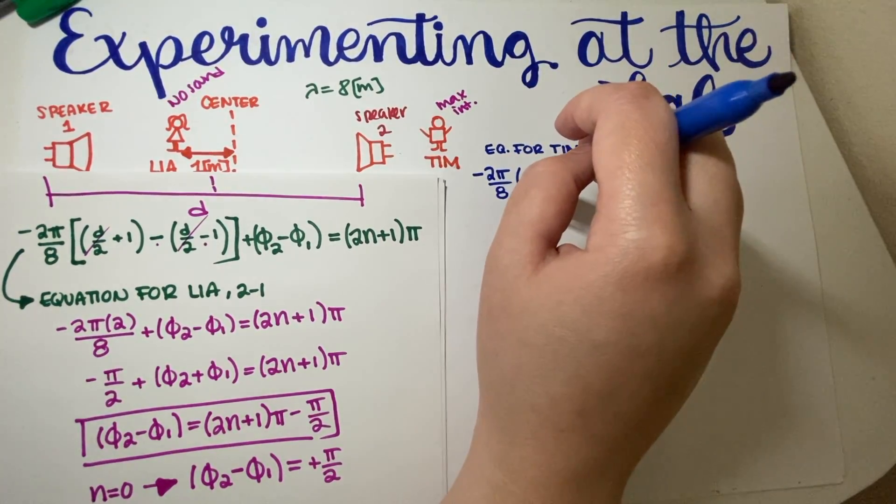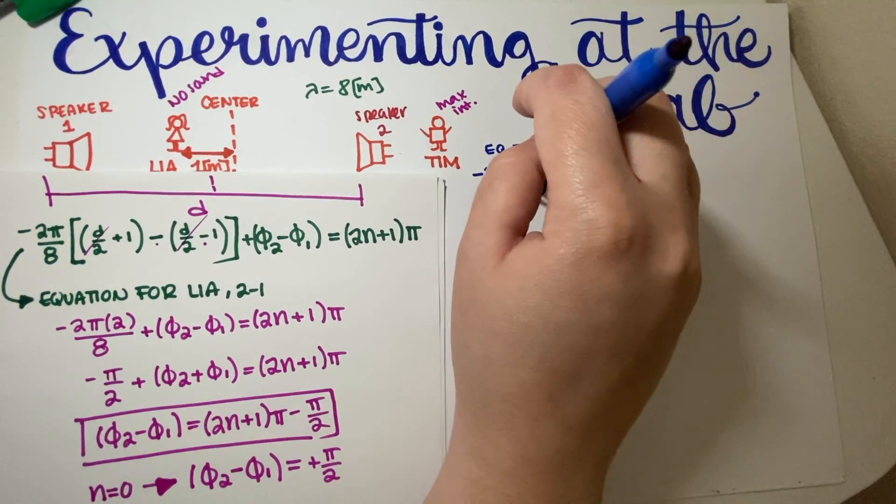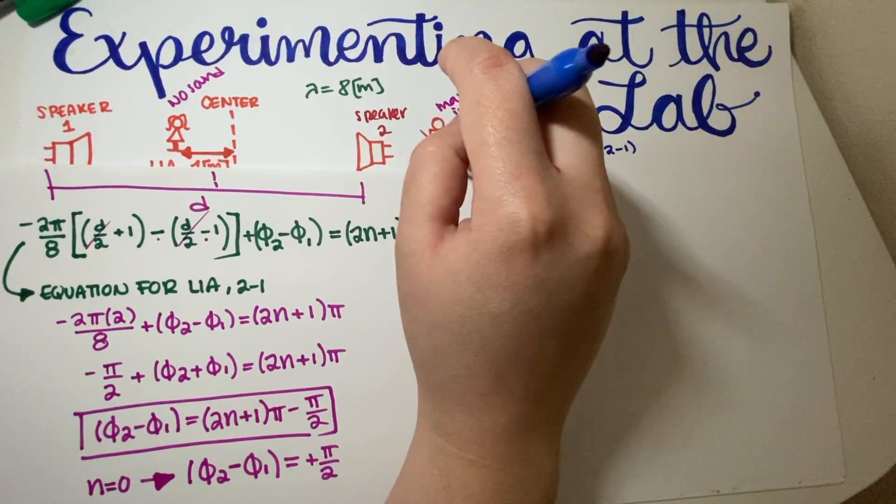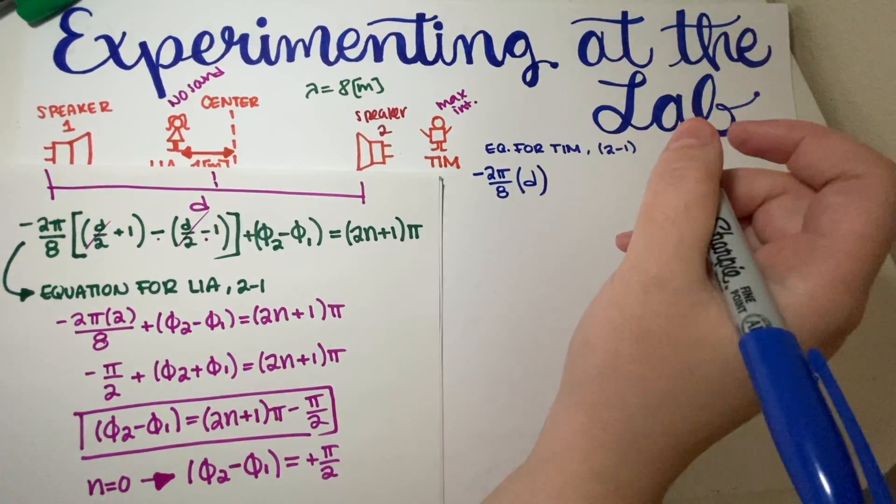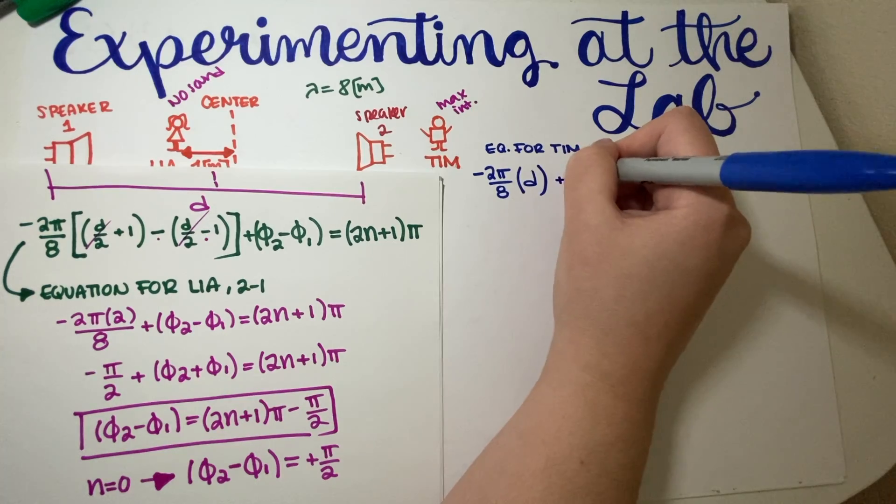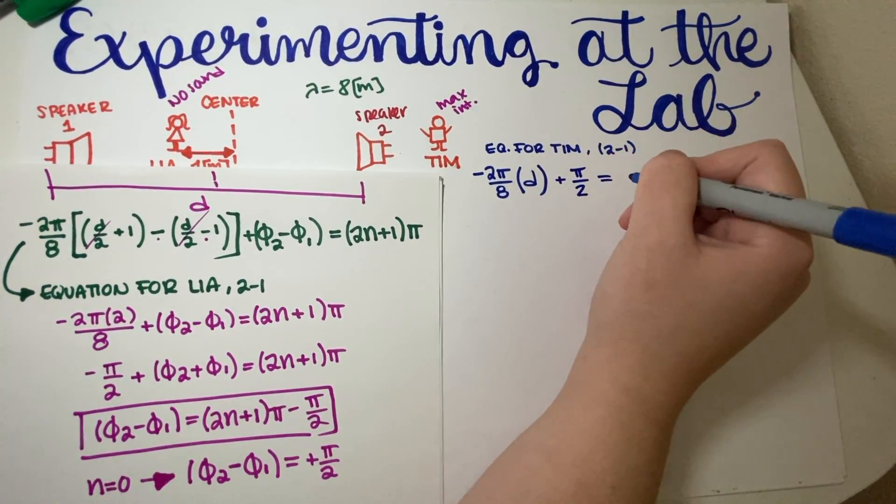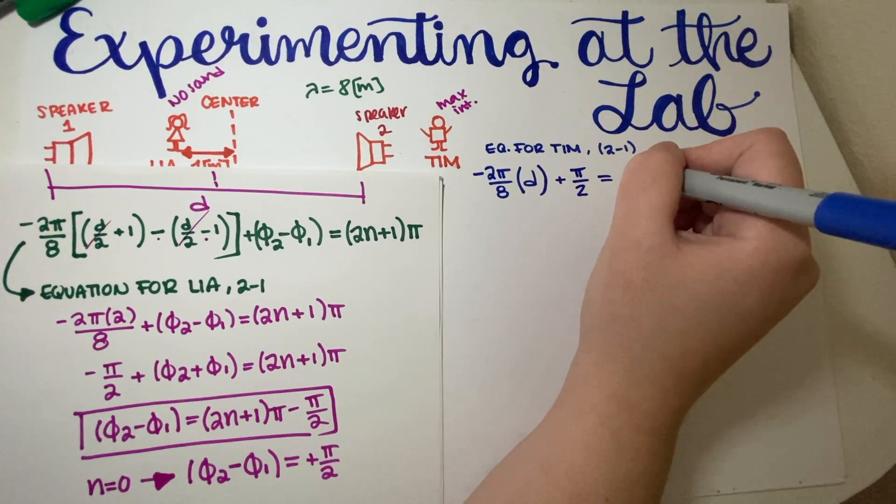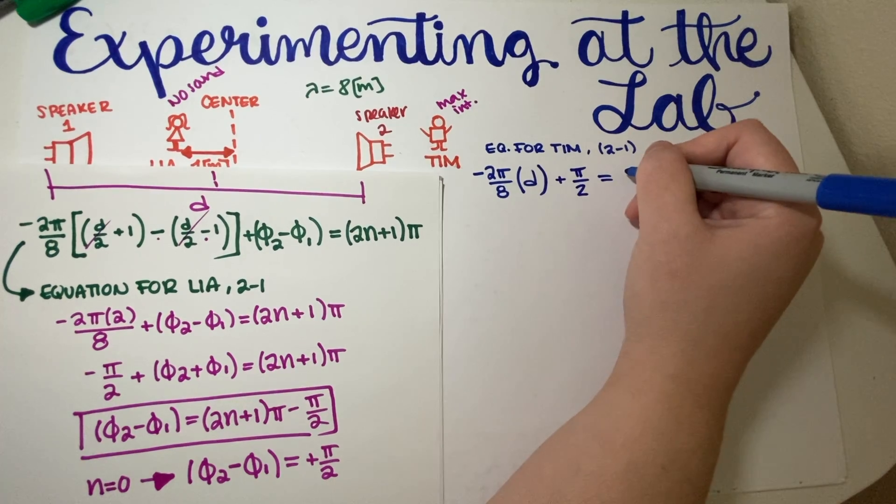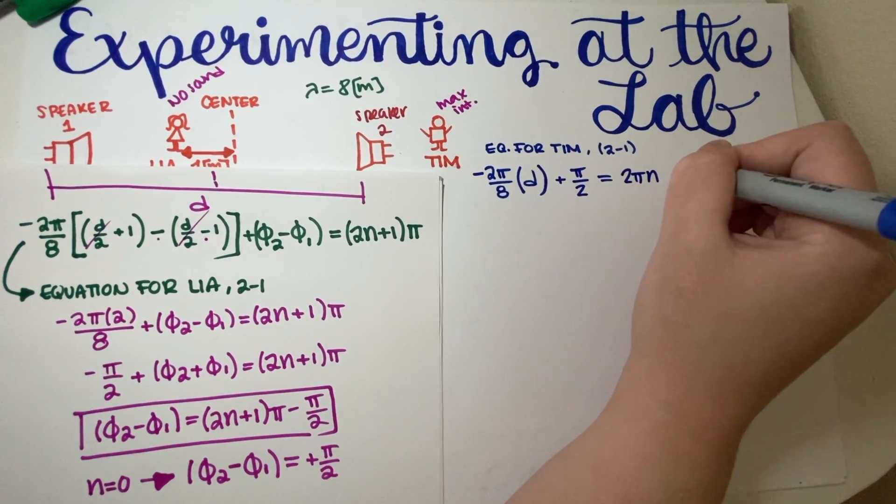But basically the only thing that matters over here is that you guys have the distance, the distance. But again, if you want to figure it out, if you want to put an X and then you want to cancel out the X, that's fine. And then the phase differences are +π/2. And then Tim actually hears maximum sound. Yeah, maximum. So maximum intensity would be equal to 2πN, right?